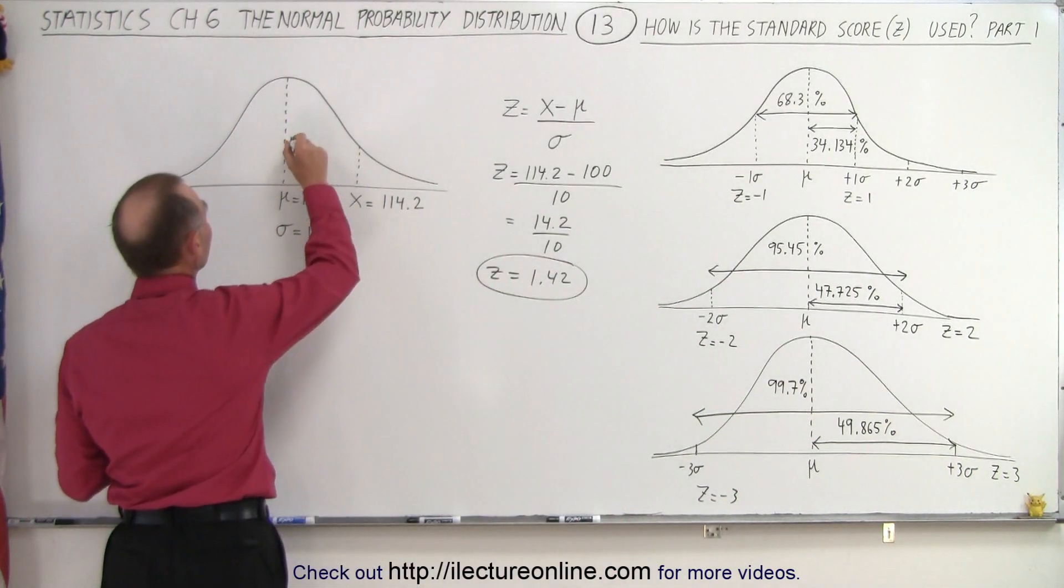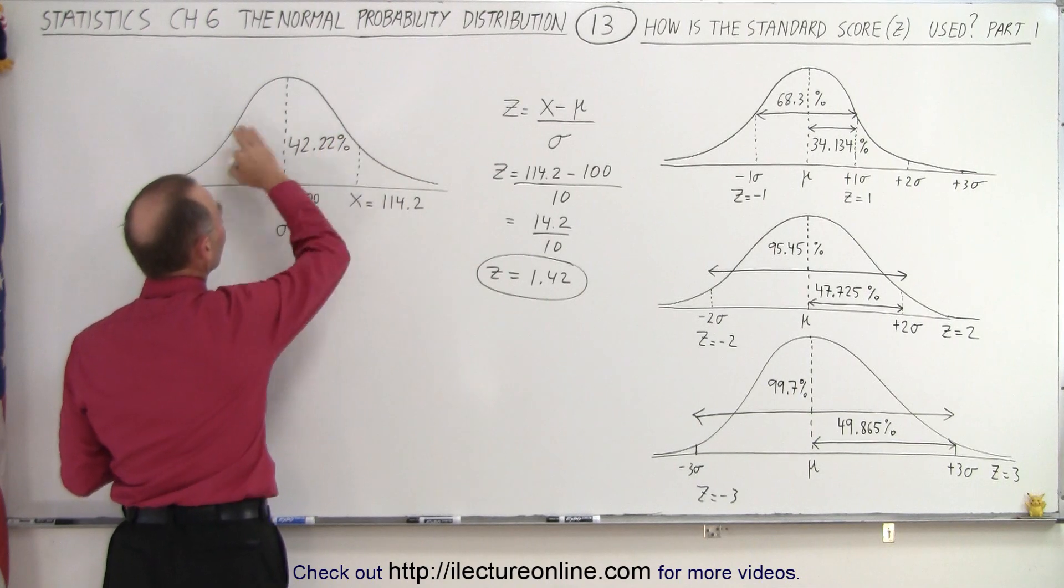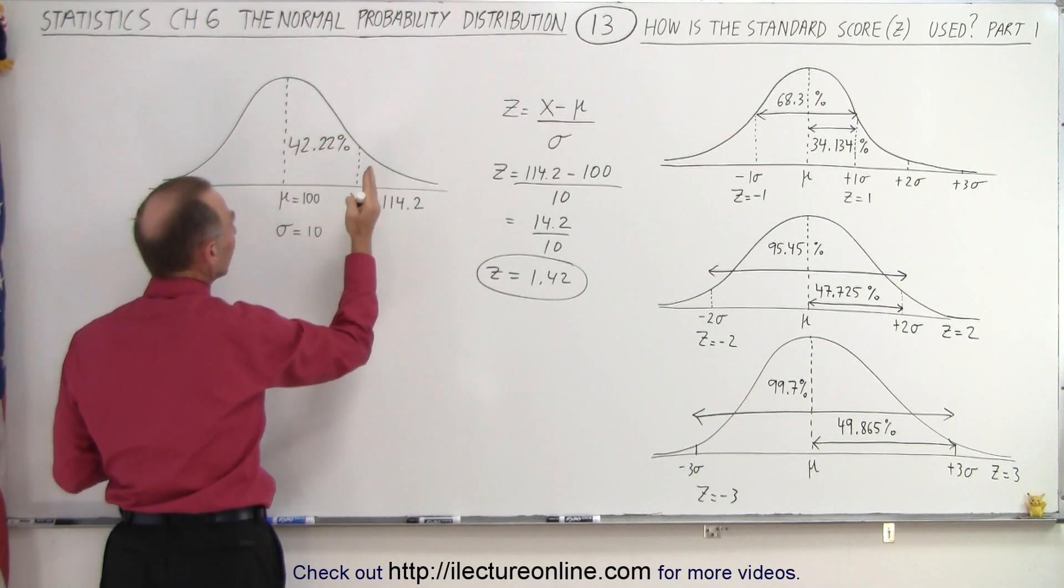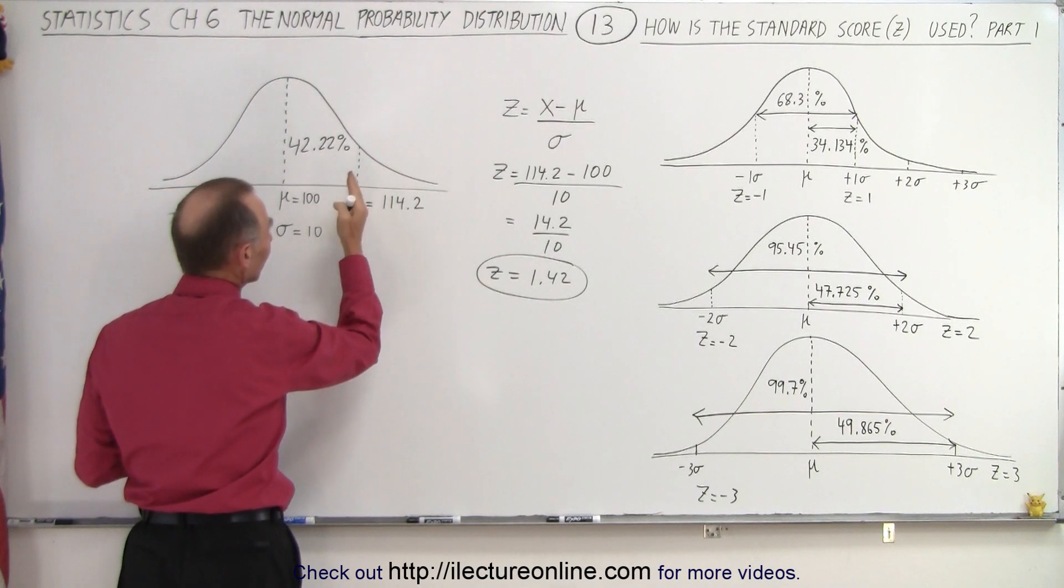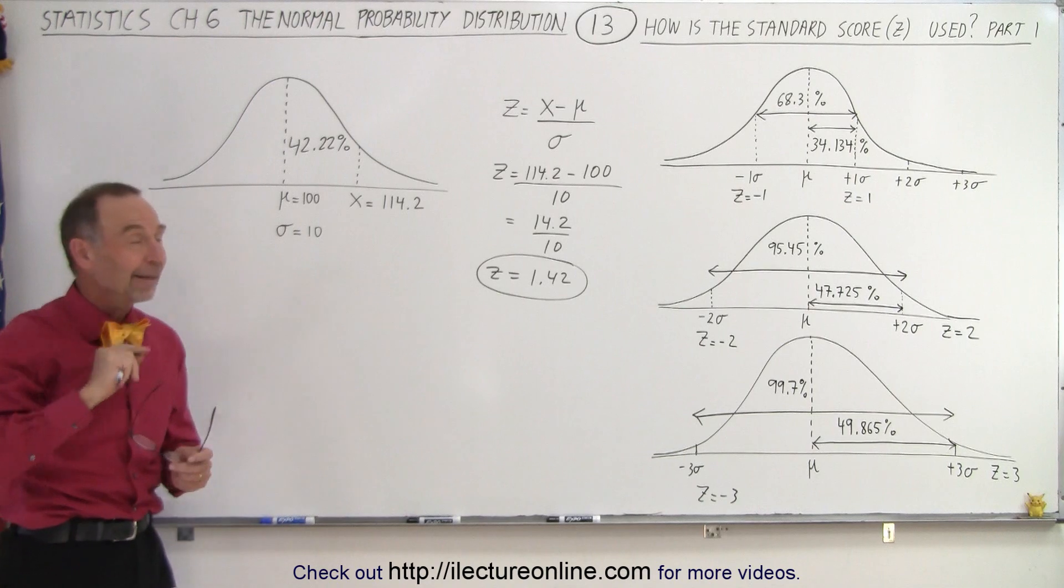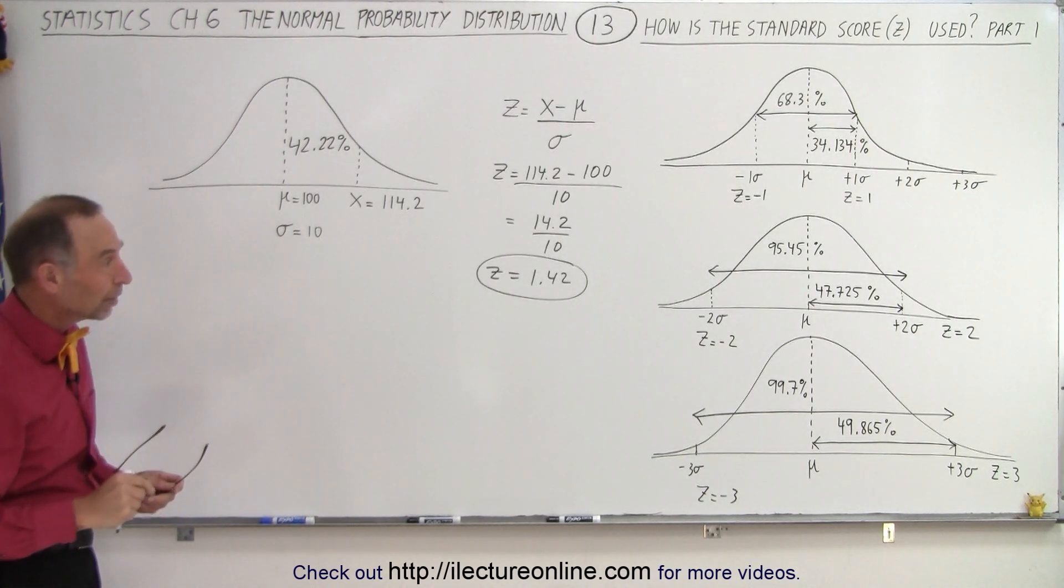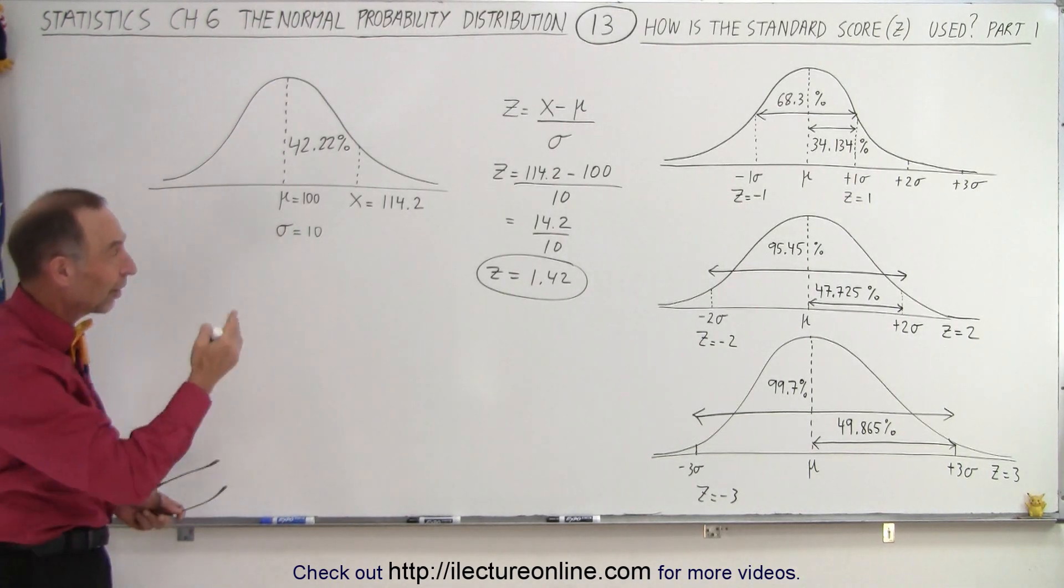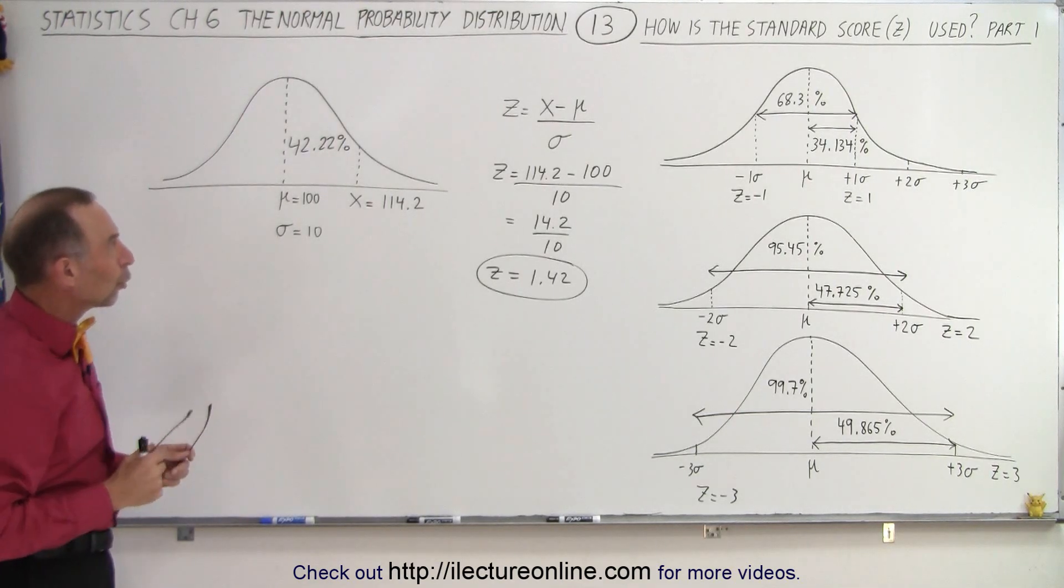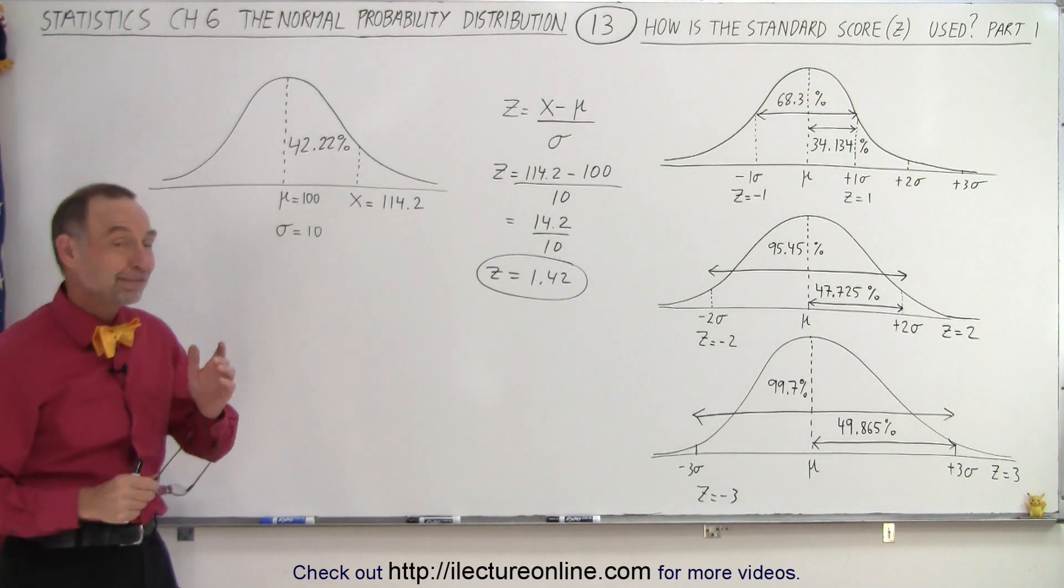So, not too far off in my guess. 42.22% of all the values in the random distribution would fall between the mean and 1.42 times sigma, or the standard deviation, above the mean. And that is how we use the standard score, at least some of the uses of the standard score, in the standard or the normal distribution curve. And that is how it's done.